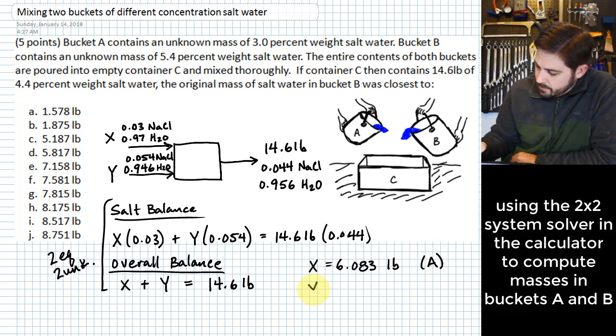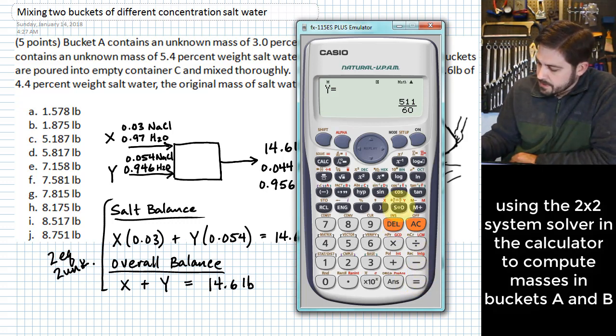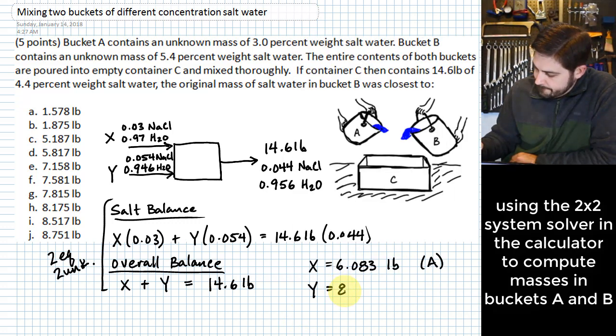All right for our other value we just hit equals again and this gives us 8.517 pounds. And that was for bucket B.